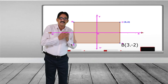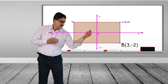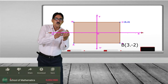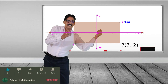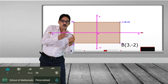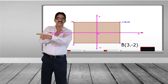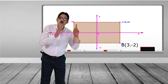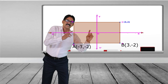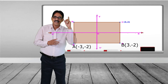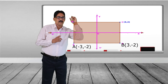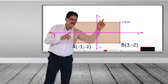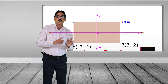Now find the coordinate of A. Since sides are parallel to the axes, and the origin is the midpoint, the x-coordinate of A is minus 3 and the y-coordinate is automatically minus 2. Therefore A is (-3, -2).